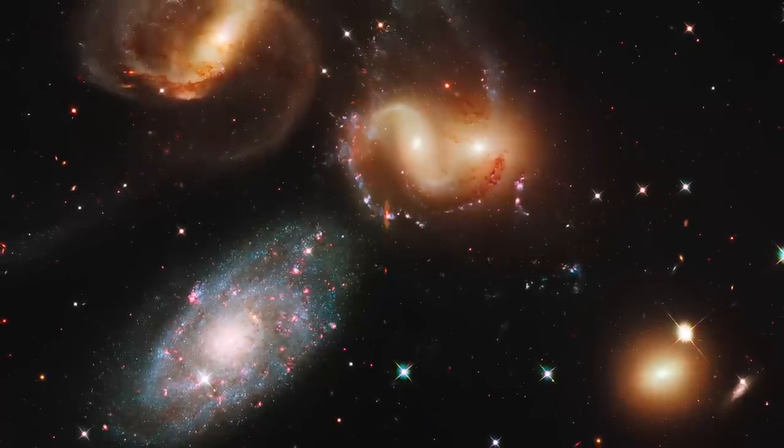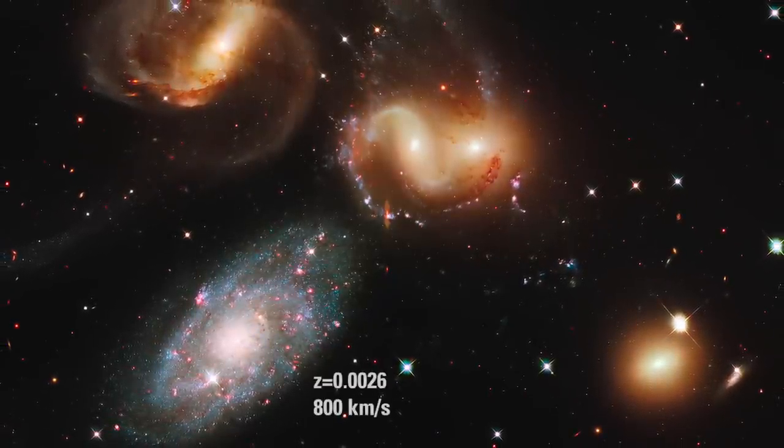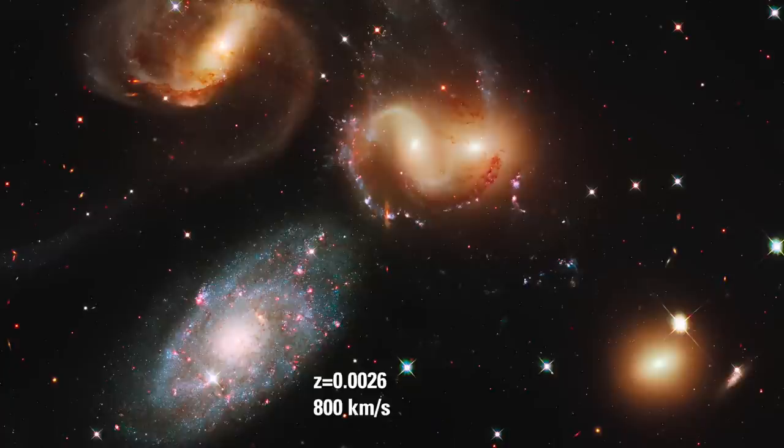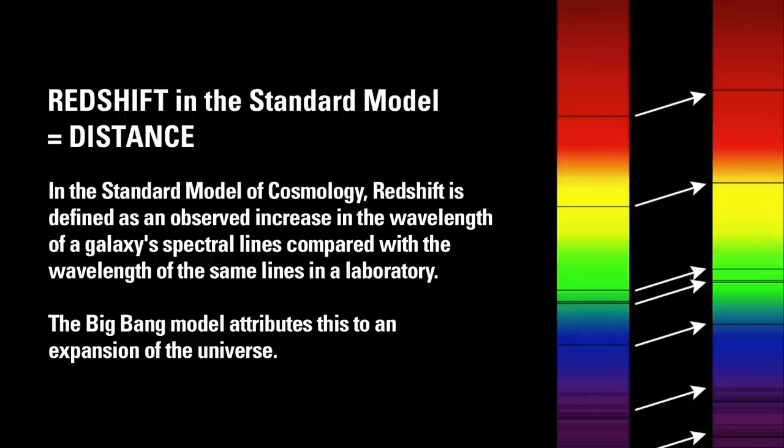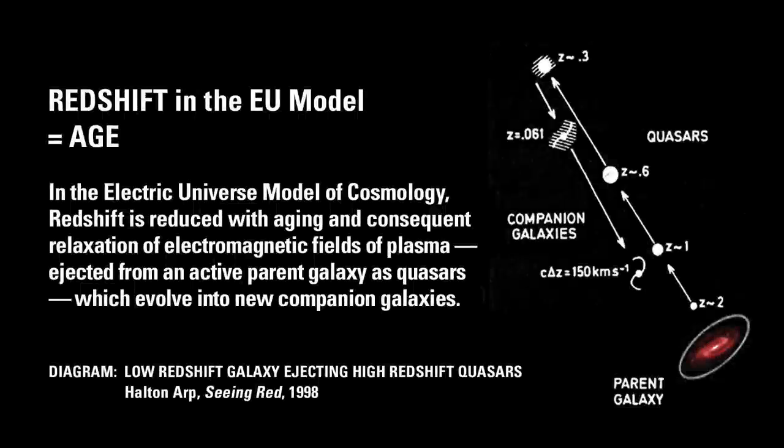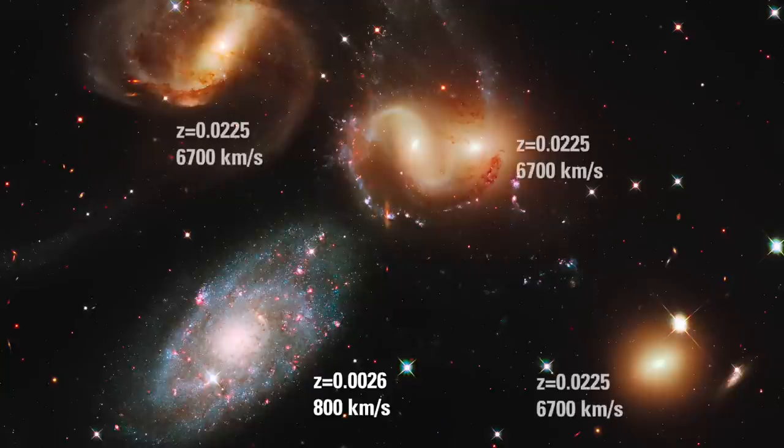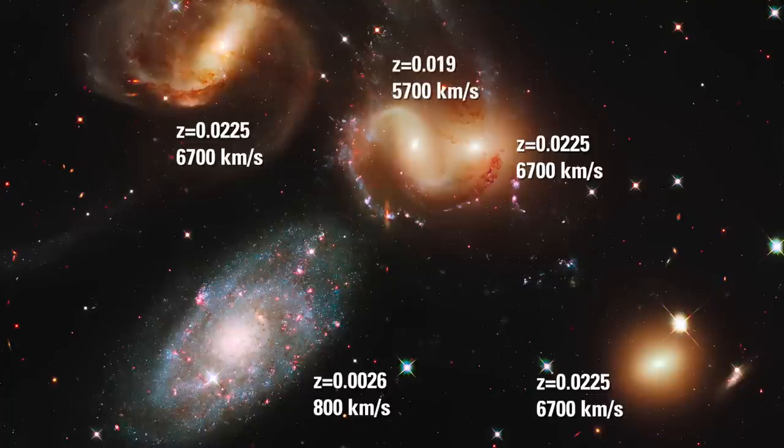The apparently larger galaxy at the southeast side of the group has a spectrally measured redshift, z, of 0.0026. Under the consensus conjecture that redshift is a Doppler effect of the hypothetical expansion of the universe, this translates into a recessional index velocity of around 800 kilometers per second. Three of the other four galaxies have index velocities of 6,700 kilometers per second, redshifts of 0.0225. One of the two that appear mashed together has an index velocity of 5,700 kilometers per second, 1,000 kilometers per second less, redshift of 0.019.